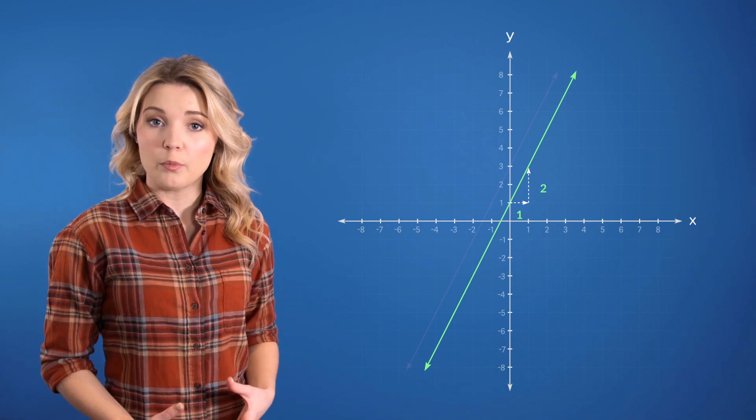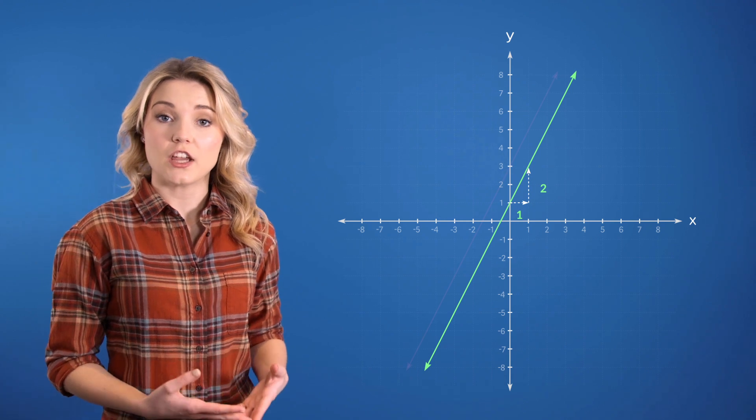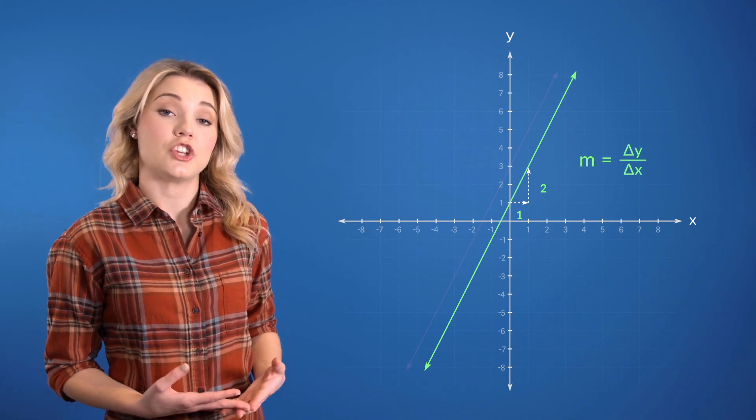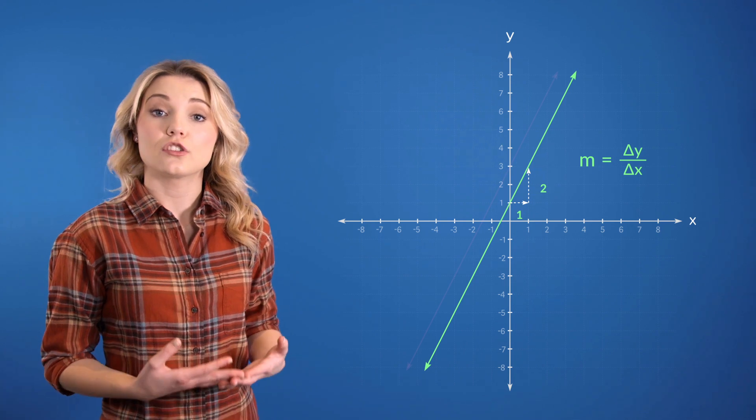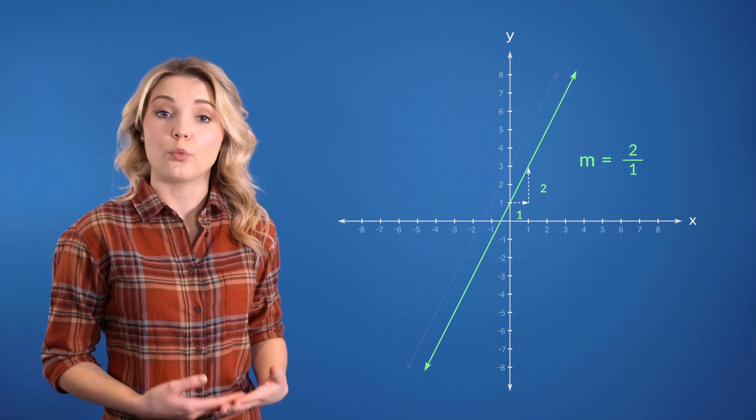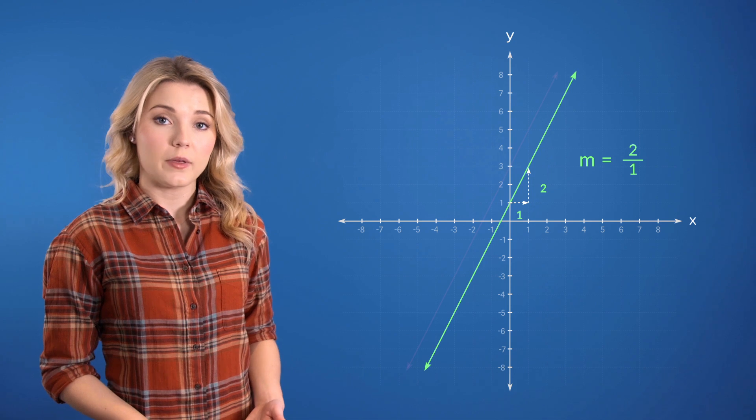So, in terms of a slope, which is defined by the change in y values divided by the change in x values, this means that the slope value would be 2 over 1, which makes our slope equal to 2.